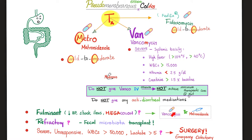If nothing seems to work, fecal microbiota transplant is an option — the poop shake. We give the patient stool from another person, because that person's stool contains normal bacterial flora. This normal flora will come and live in our patient's gut to crowd out the nasty Clostridium difficile and restore the normal balance of the microbiome.